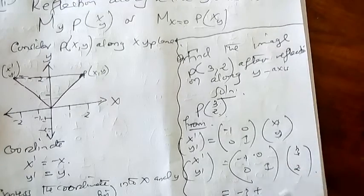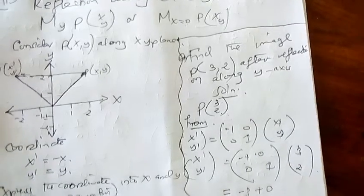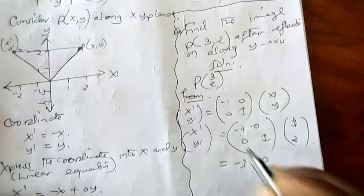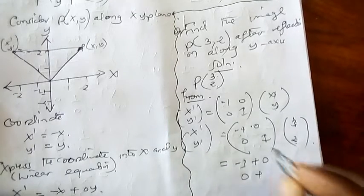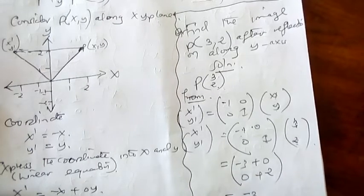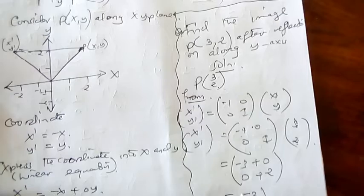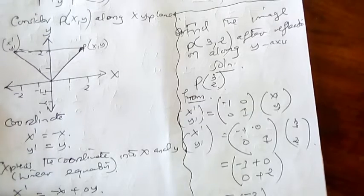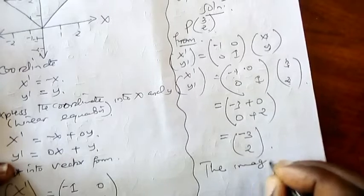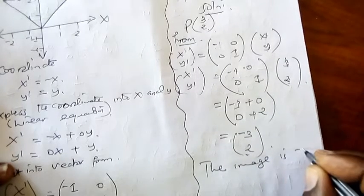Plus 0 times 2, get 0. Then we come here. This times this, we get 0, plus this times this, we get how much? 2. So here it means we'll be left with negative 3, then 2. So the image, we conclude now, the image is negative 3, 2.